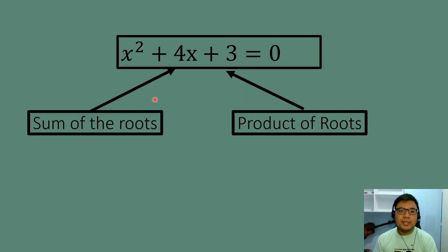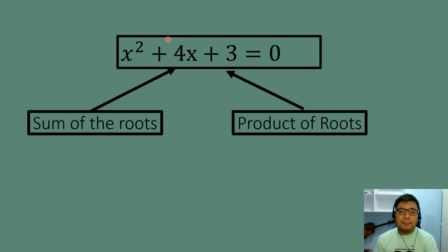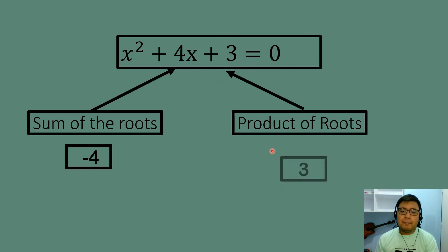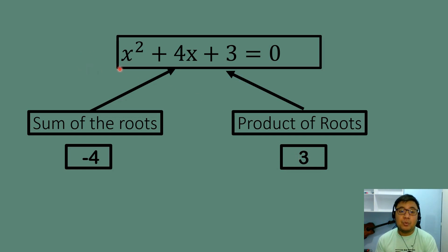Let's observe this quadratic equation. Since A equals 1, the numerical coefficient of x squared is just 1. The positive 4 as the coefficient of the linear term becomes negative 4 in the sum of the roots. For the product of the roots, the constant term value of positive 3 stays positive — the sign does not change when A equals 1.